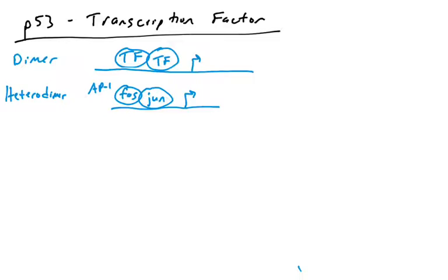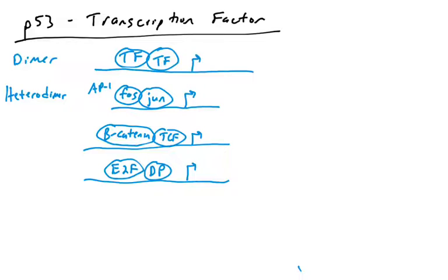Many human transcription factors function this way. Here's an example of a transcription factor called AP1, which consists of two proteins — a FOS protein and a JUN protein. This is actually a heterodimer, and there are many genes with AP1 binding sites. We've also talked about other transcription factors such as beta-catenin, which binds to another protein called TCF — a heterodimer that acts as a transcription factor. E2F and DP are also proteins that work as heterodimers to transactivate genes.